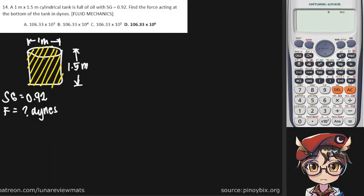In order to find the force at the bottom of the tank, we need to know the mass of our substance — which in this case is our oil — multiplied by the gravitational acceleration here on Earth. Now since the specific gravity of our oil is given, we can therefore use this formula to find the density of our oil.